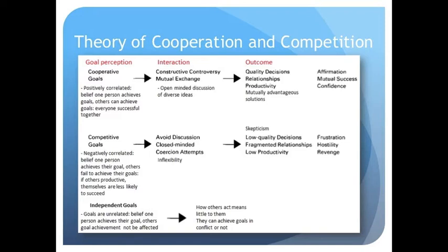Additionally, goal independence occurs when people believe their goals are unrelated, so that as one person achieves their goals, others' goal achievement will not be affected at all. They conclude that how others act means little to them, and that they can achieve their goals in the conflict or not. Overall, whether people conclude their goals are primarily cooperative or competitive profoundly affects their orientation and intentions towards each other.